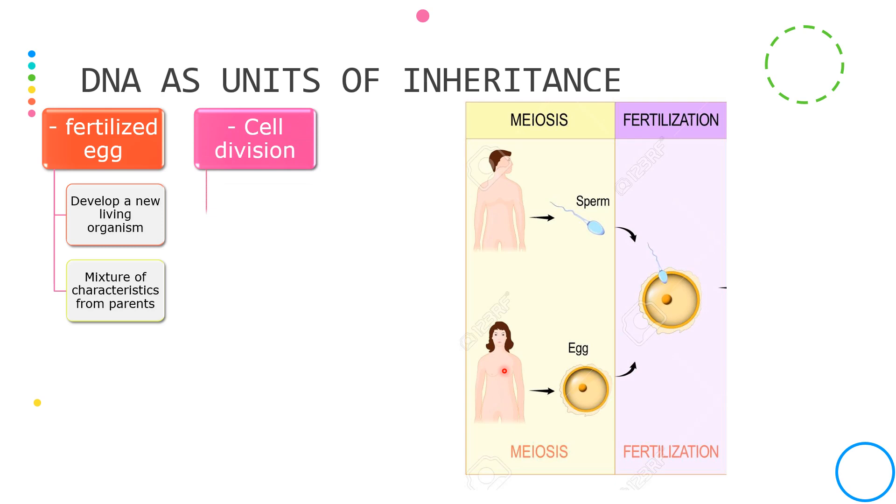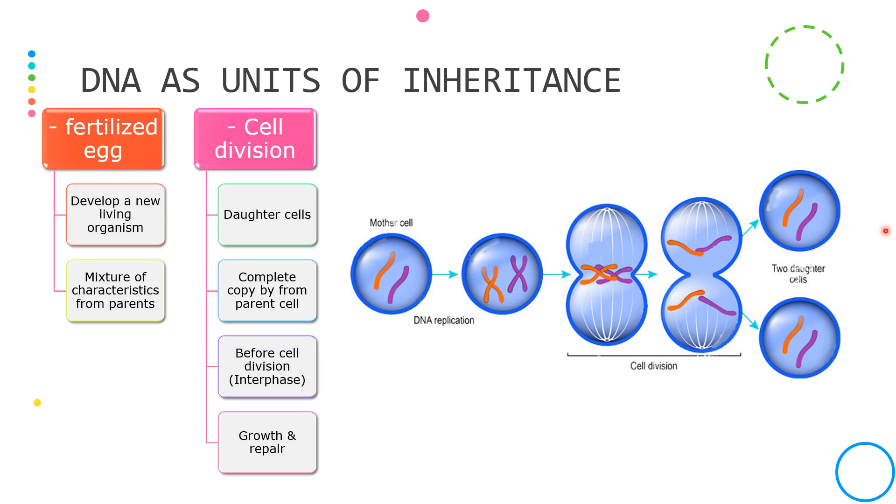Genes must also be able to replicate every time a cell divides so that each of the two daughter cells can be given a complete copy of the biological information by the parent's cell.